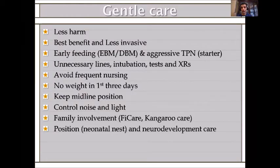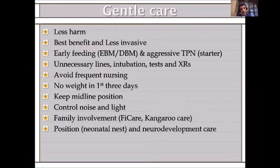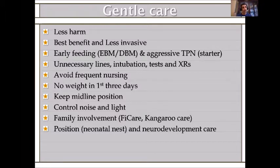There is also something called gentle care, in addition to golden hour. Gentle care means do less harm, give the best benefit, and do the least invasive possible. Gentle care includes early feeding — whether expressed breast milk (EBM) or donor breast milk (DBM). I know donor breast milk may be religiously unacceptable in the Middle East, but evidence shows it improves nutrition, reduces hospital stay, and decreases necrotizing enterocolitis. Early feeding is important, whether EBM or DBM, and also aggressive TPN.